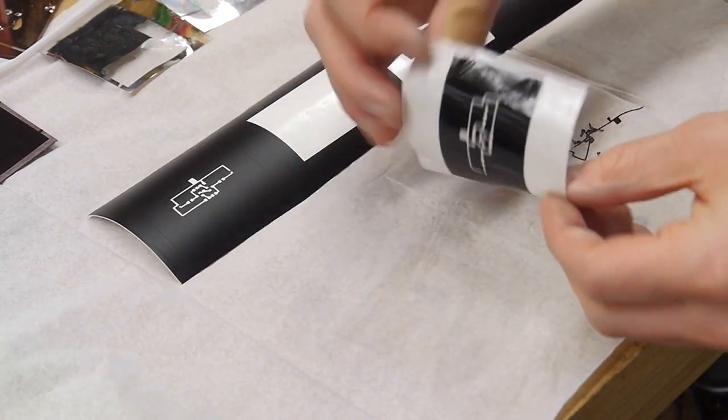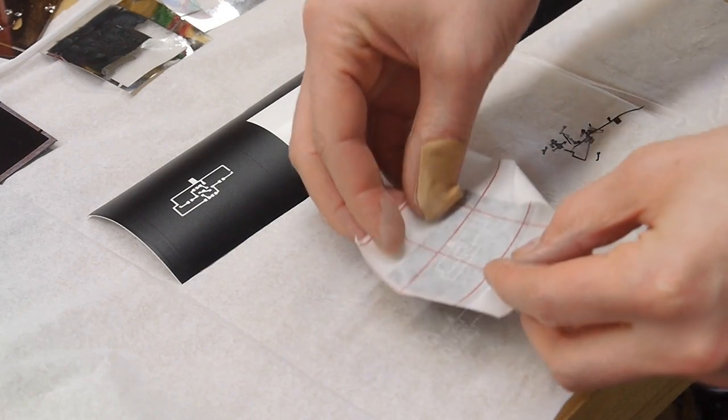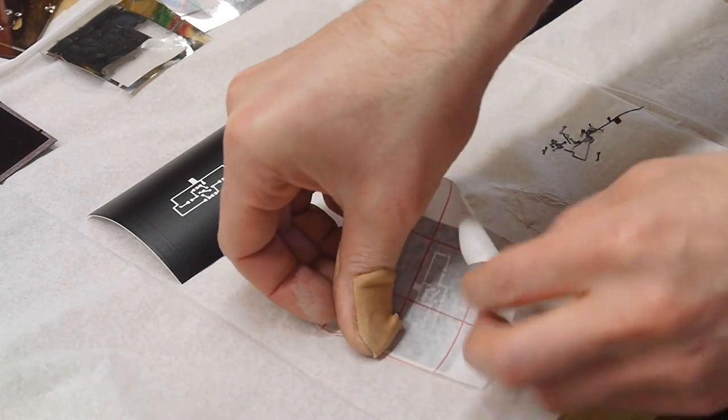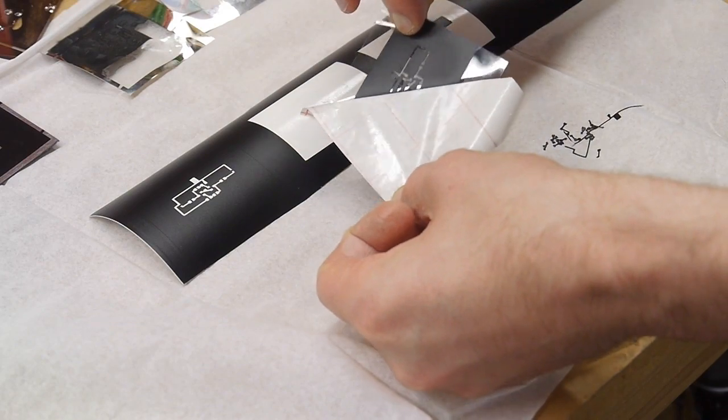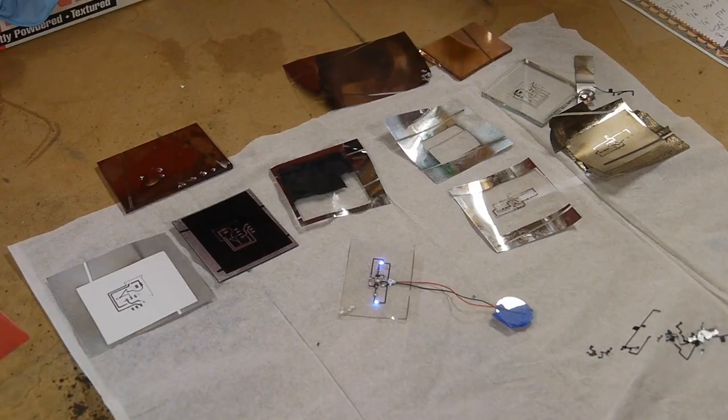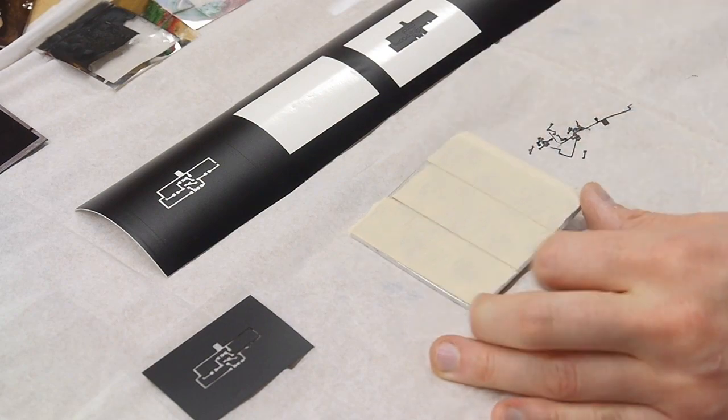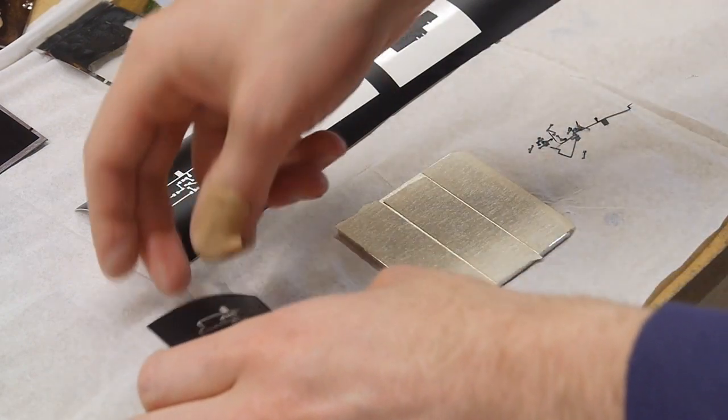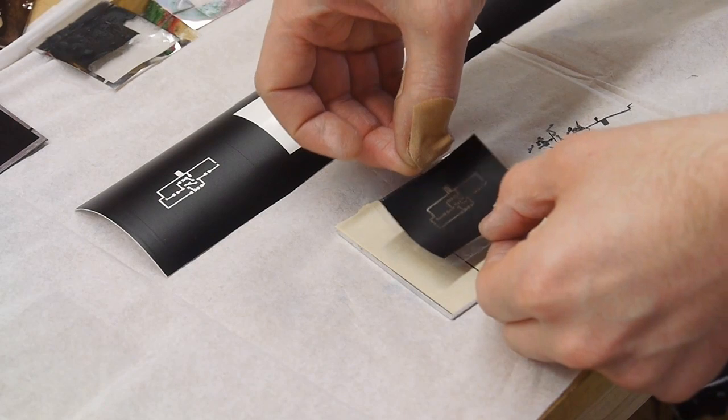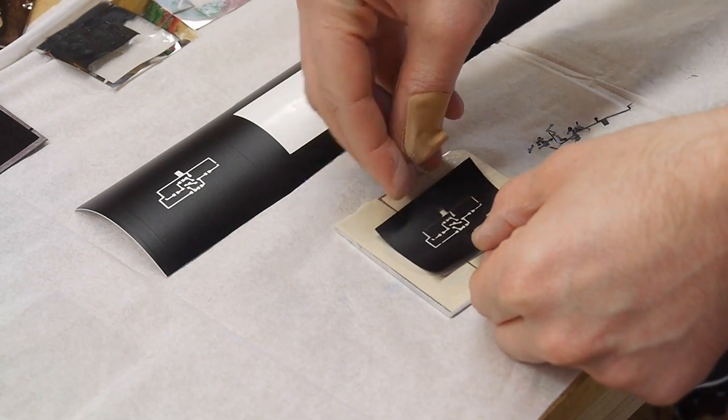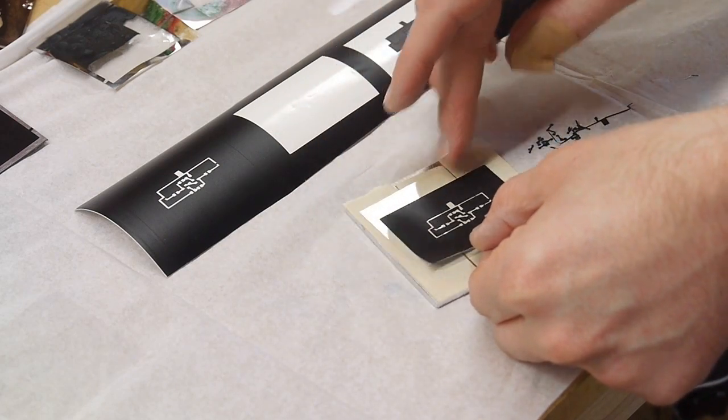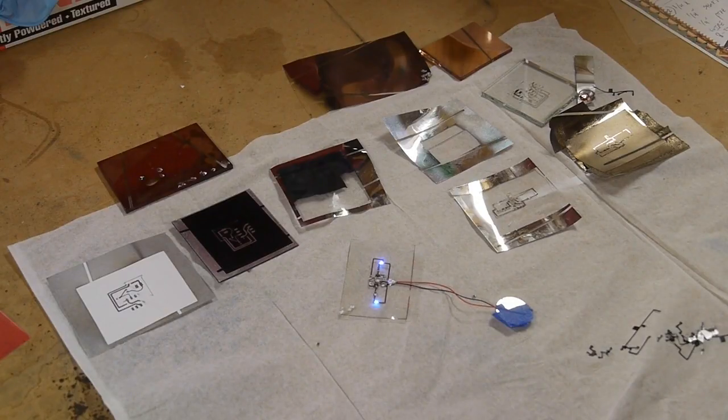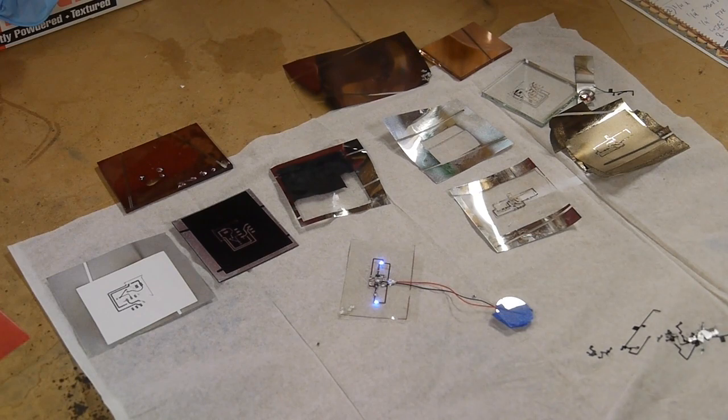Then I deposit it onto a substrate, and in this case I'm using some clear transparency sheets, laser printer transparency sheets. I then double stick the transparency sheet onto an aluminum backing plate. The point of this is just to keep it flat and also to keep it from overheating when I put it in the vacuum chamber. I'm going to be exposing this to very high intensity radiant heat, and if there were no backing plate the plastic would get very hot and warp.